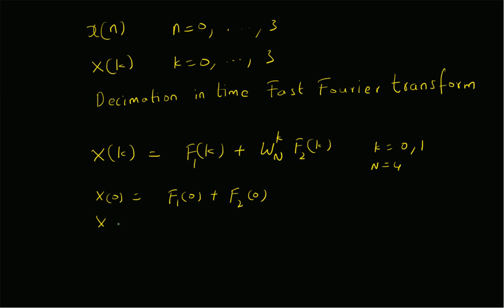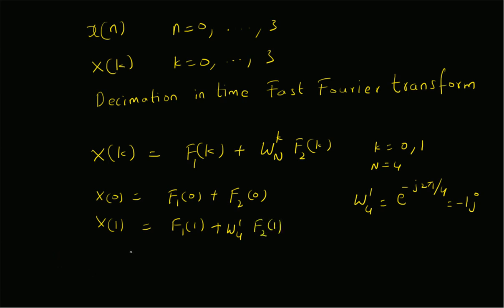Similarly, for k equal to 1, X[1] is F1[1] plus W_4^1 * F2[1], where W_4^1 = e^(−j2π/4), which is −j. We also have the second set of equations: X[k + N/2] = F1[k] − W_N^k * F2[k].